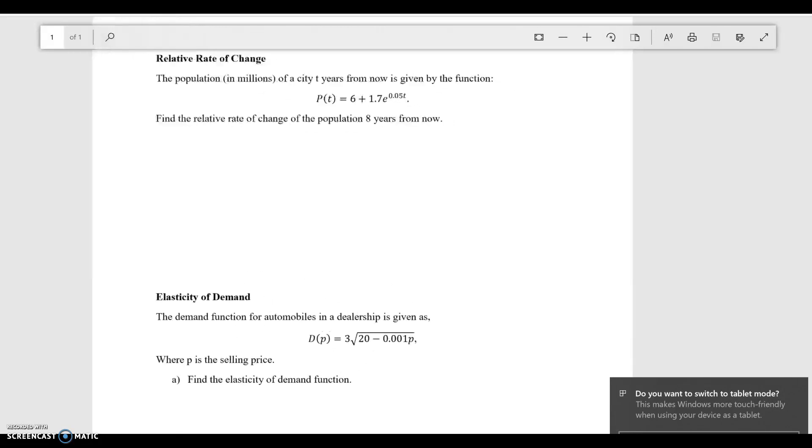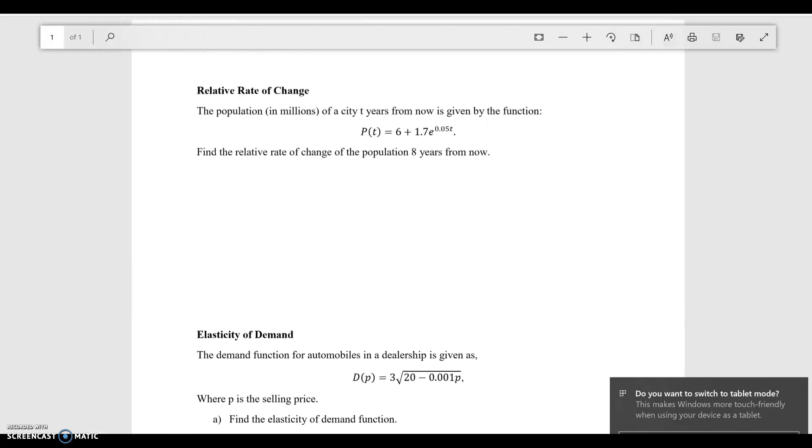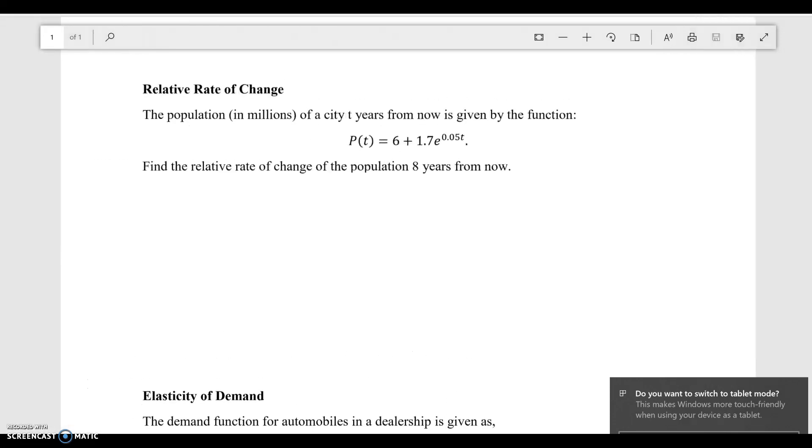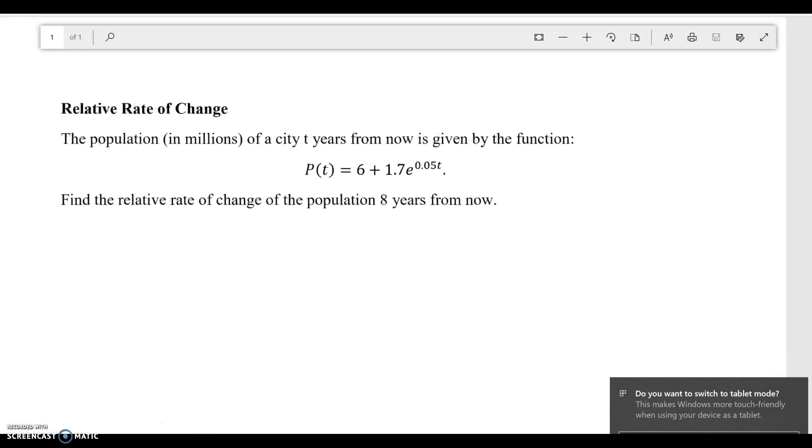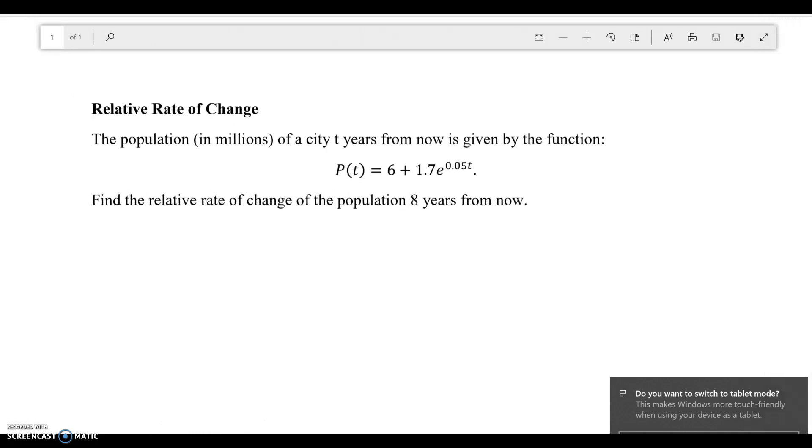Now let's talk about word problems. In this problem, I want to find the relative rate of change. The population in millions of a city t years from now is given by the following function: P(t) equals 6 plus 1.7 e to the 0.05 t. We want to find the relative rate of change of the population 8 years from now.